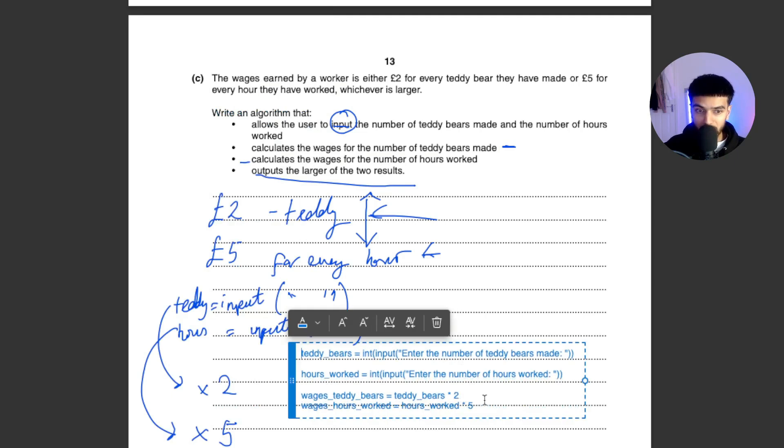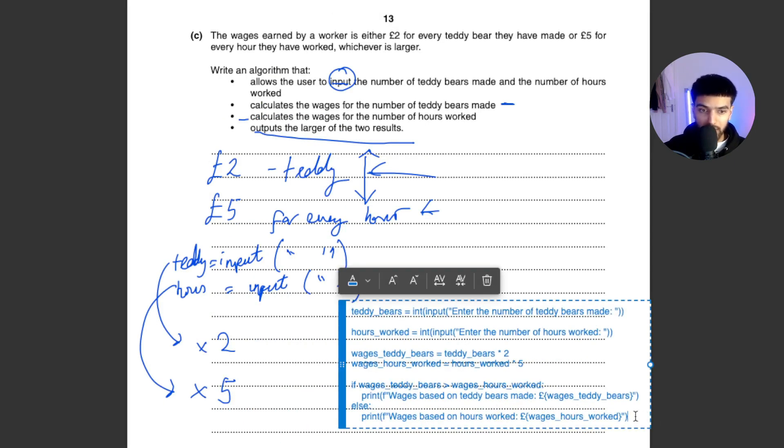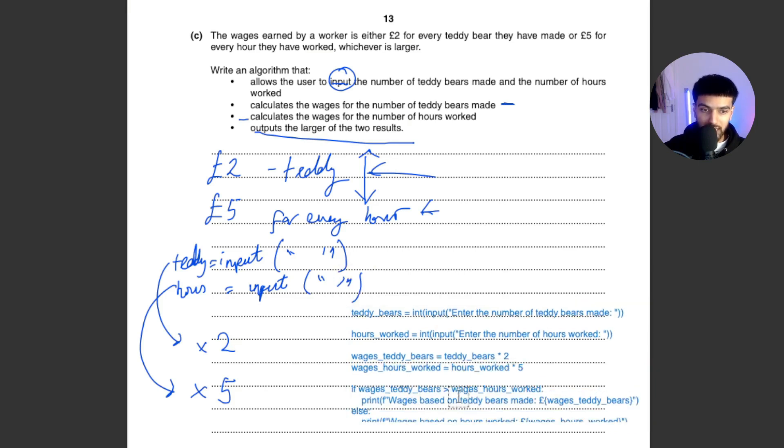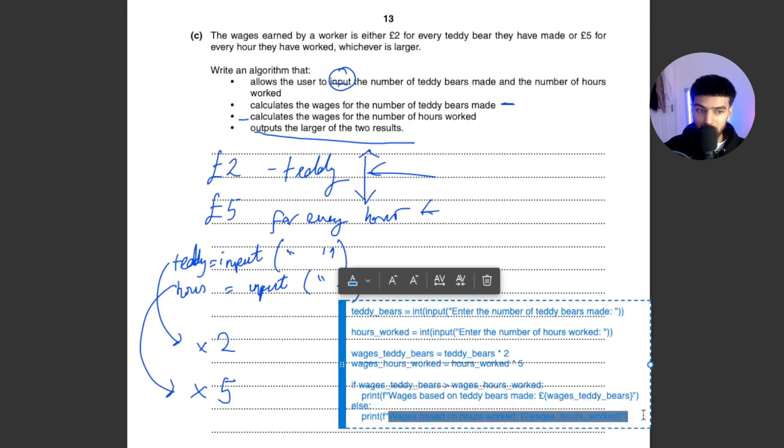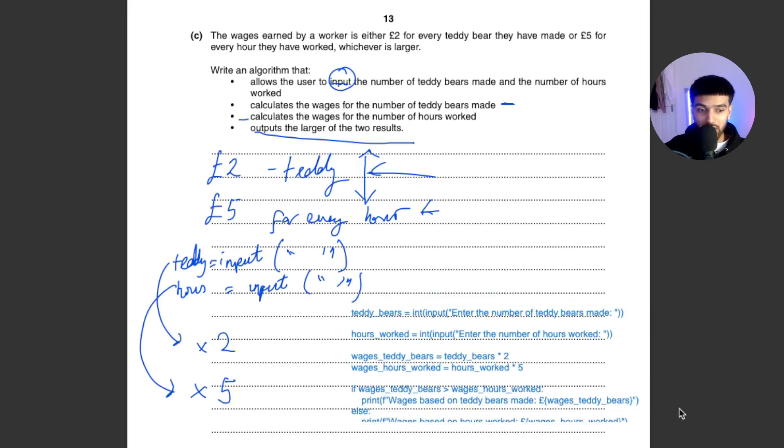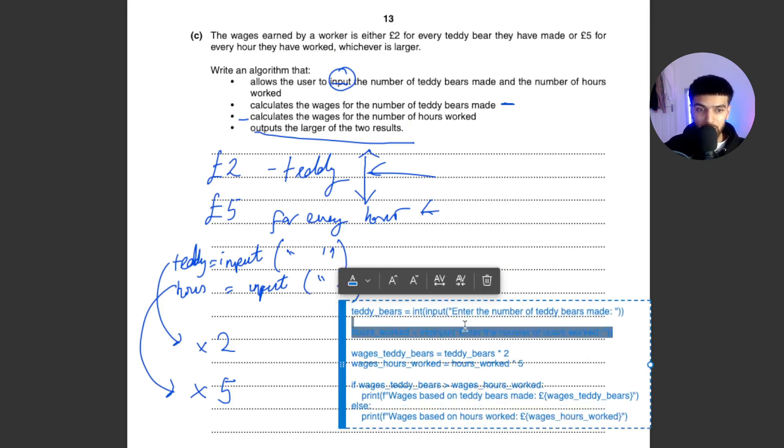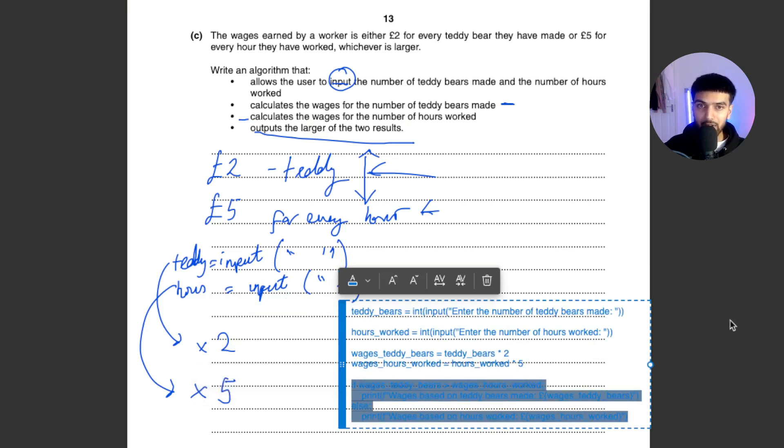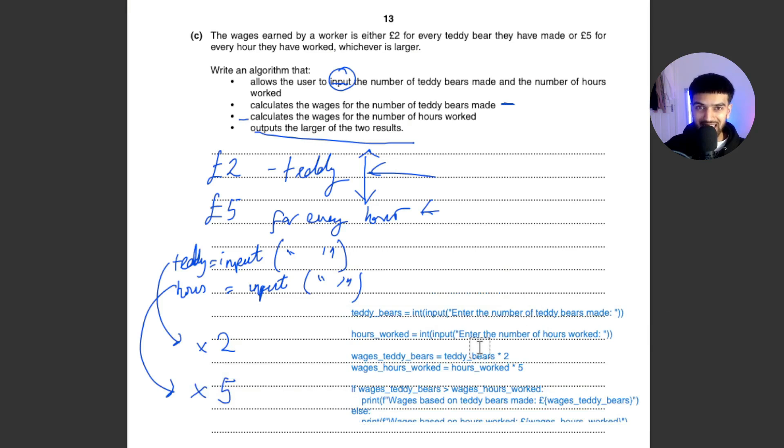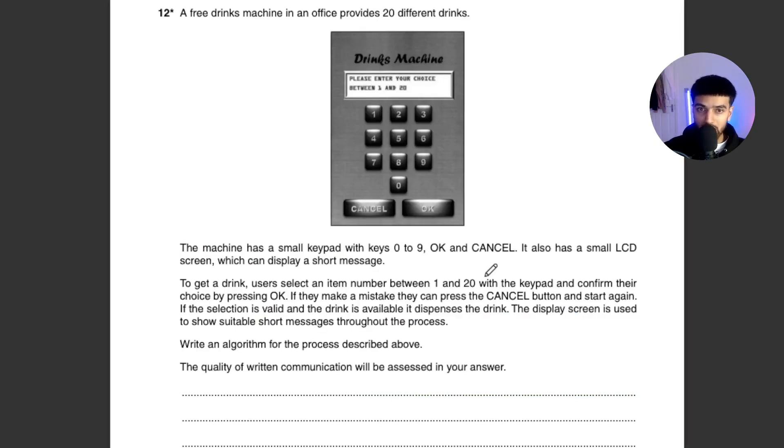And five pounds, and we output the larger. So we're going to be comparing what we do here with whichever is larger and output. So this is what we do first: teddy bear equals the input and hours equals that, then we're going to find the wages for both of them. We just multiply by two and five, and then we do a simple if statement that compares which one is larger. So teddy bear greater than wage hours, then we're going to print the teddy bear's wage, otherwise we're going to print the hours wage. Again, something like this you need to get correct. This is six marks, so even if you just know how to do inputs and do these basic calculations, you would get four marks. And the last two marks come from the comparison, which if you did make it this far you should know how to do.